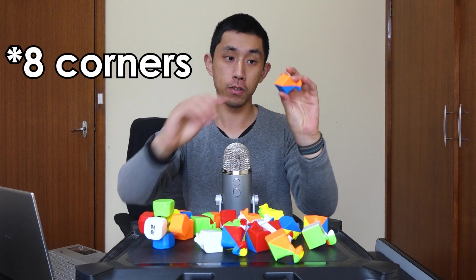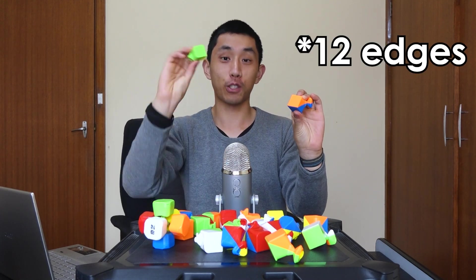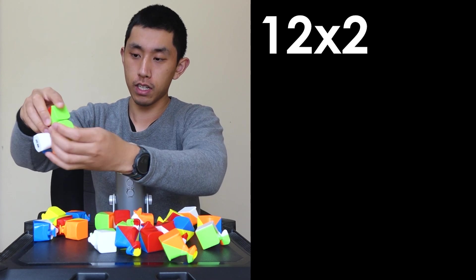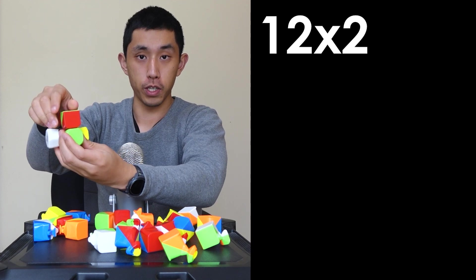By doing that, we can see there's a fixed core in the middle, 12 edge pieces each with three colors on them, and 8 corner pieces which have two colors on them. We can put it in one of two ways in each location, like this, or like this. So two possible orientations.